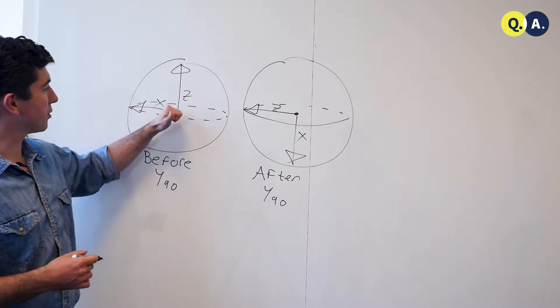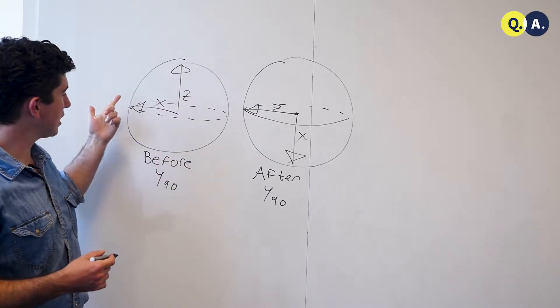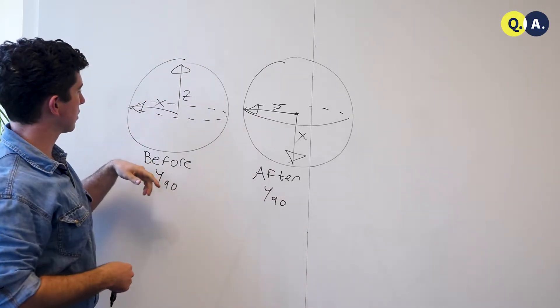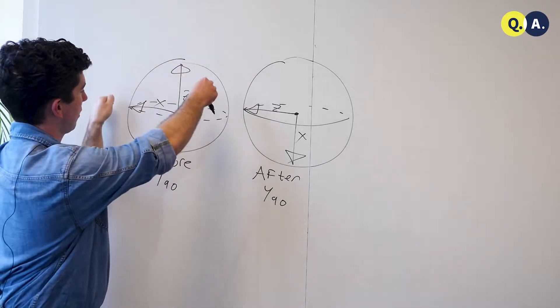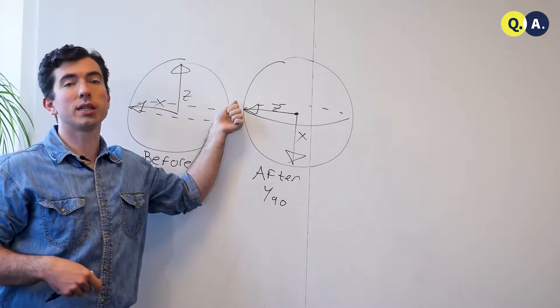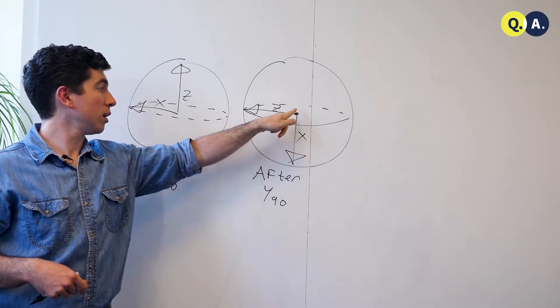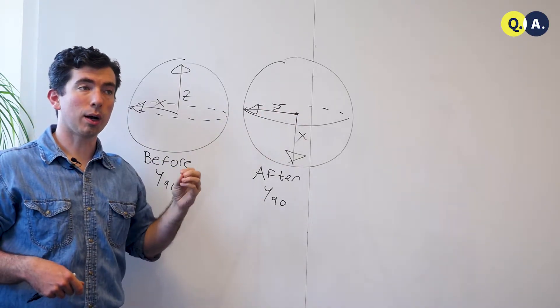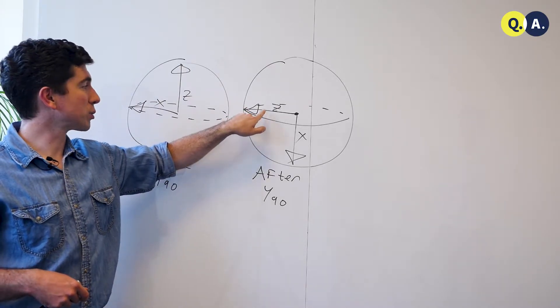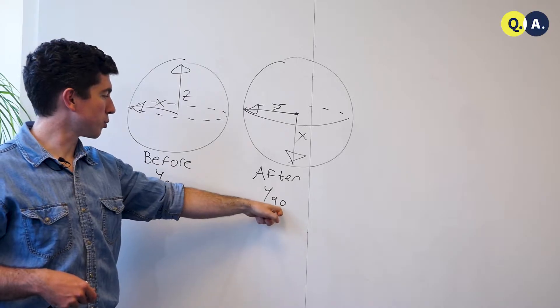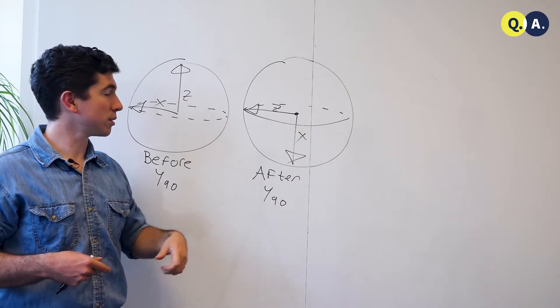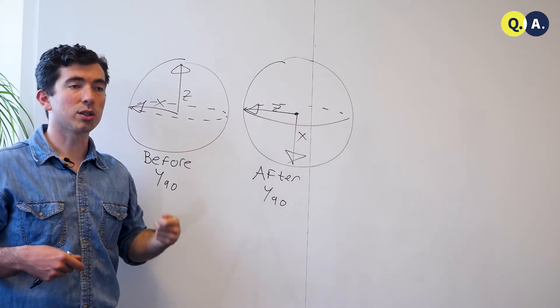If we write down a Bloch sphere with the y axis pointing out of the board, we can see the effect of a y 90, a rotation around 90 degrees of the y axis, is just turning the sphere, sort of like a steering wheel, so that the x axis now faces down and the z axis is where the x axis used to be. If we now apply a rotation around the x axis, that's giving us a rotation around our old z axis. And once we have that done, all we need to do is reverse the y 90 with a y minus 90, to restore the orientation of our original axes, having picked up a phase on the z.